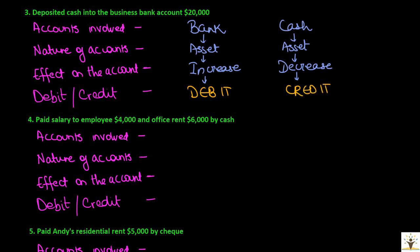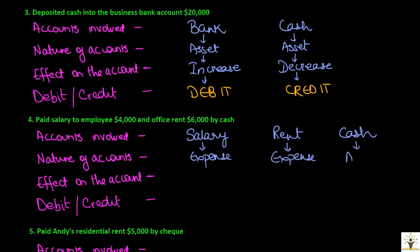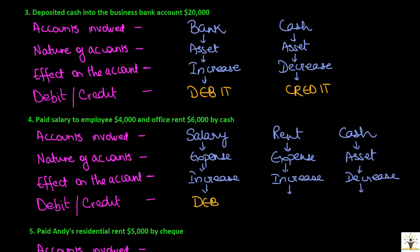Fourth transaction: paid salary to employee $4,000 and office rent $6,000 by cash. The accounts involved are salary account, rent account, and cash account. Salary is an expense, rent is an expense, and cash is an asset. Expense increases in this transaction — rent expense also increases. Since the business is paying cash, cash will decrease. When an expense is paid it is debited — hence salary will be debited, rent will also be debited, and cash will be credited.